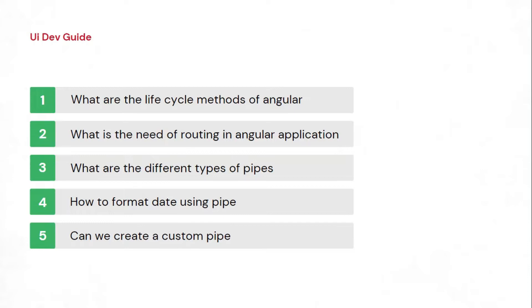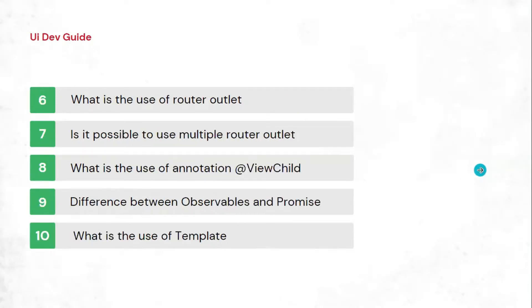The next question is how to create a custom pipe. You should explain how to generate a pipe, how to use it in your component, and the steps to include it in your Angular project. You should also check what gets automatically generated in the custom pipe file when you create one, as those details may also be asked as counter questions.